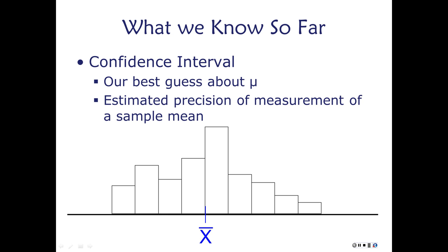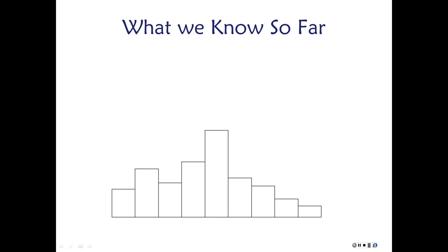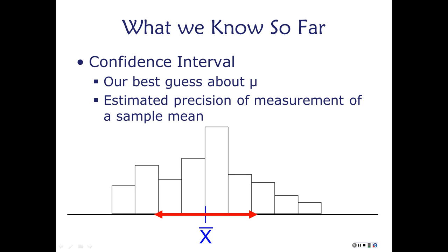A confidence interval is a measure of the estimated precision of measurement of our sample mean. If we've got our sample mean and our confidence interval, that's our best guess about where the mean probably is with a certain level of confidence, like 95%. Confidence is a fuzzy concept that doesn't translate directly into probability, odds, or certainty — it's just confidence.